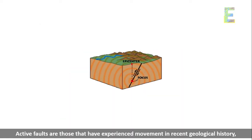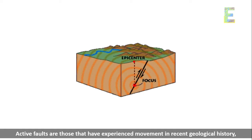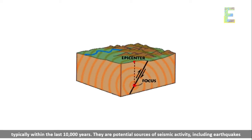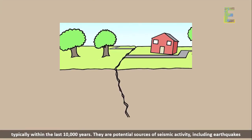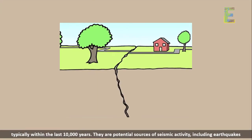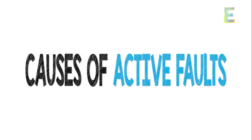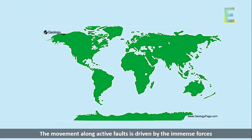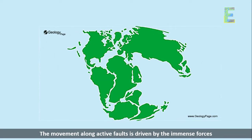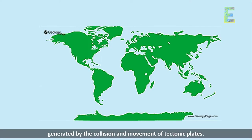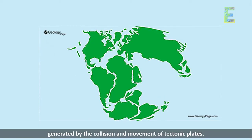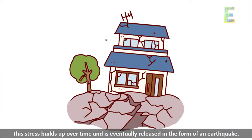Active Faults. Active faults are those that have experienced movement in recent geological history, typically within the last 10,000 years. They are potential sources of seismic activity, including earthquakes. The movement along active faults is driven by the immense forces generated by the collision and movement of tectonic plates. This stress builds up over time and is eventually released in the form of an earthquake.